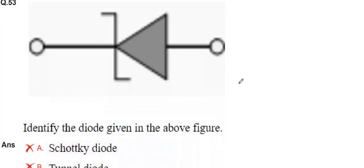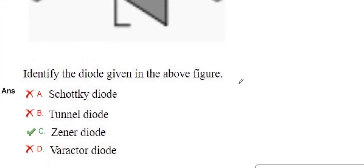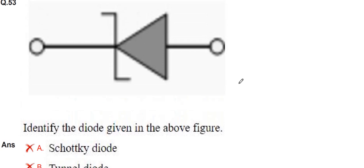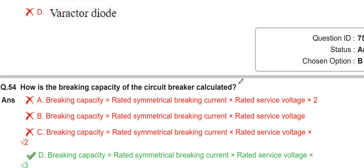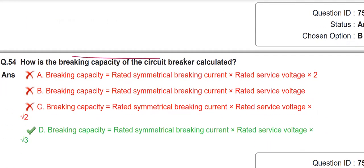The next diagram is called a general diode. For the breaking capacity of a circuit breaker: breaking capacity = rated symmetrical breaking current × rated service voltage × √3, i.e., √3 × V × I.